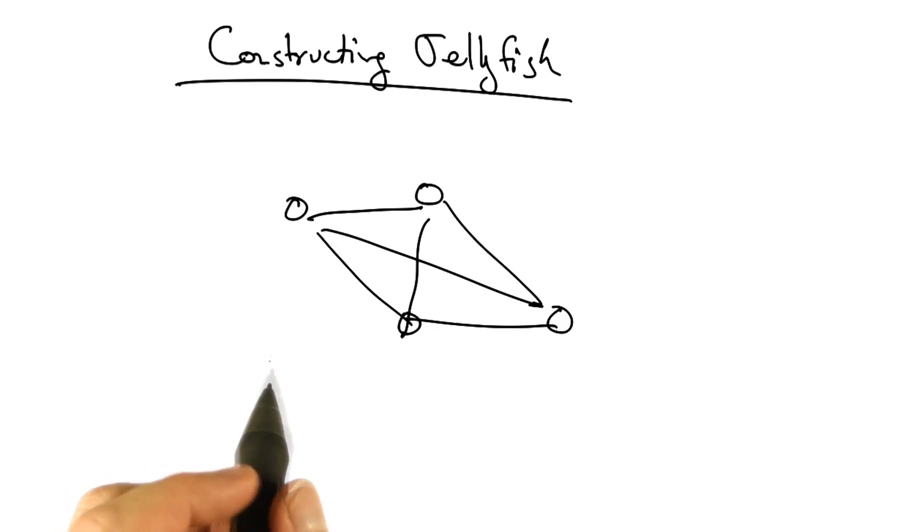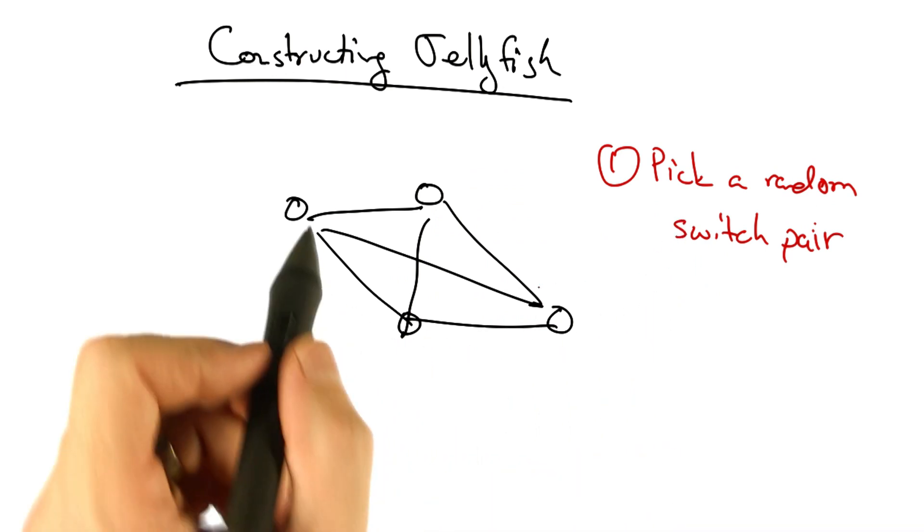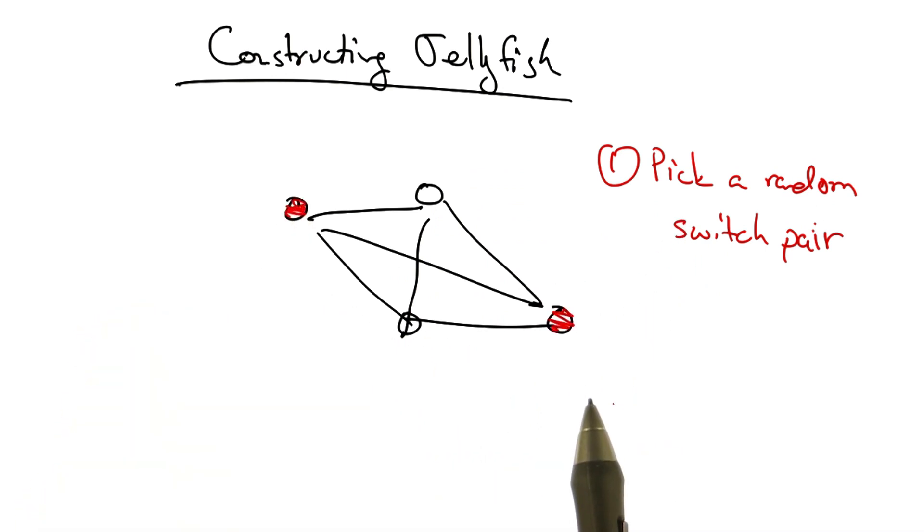To construct a jellyfish topology, one can simply take the following steps. First, pick a random switch pair with free ports for which the switch pair are not already neighbors. Next, join them with a link and repeat this process until no further links can be added.